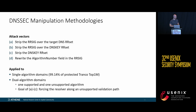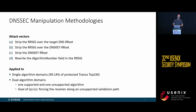We applied the attack vectors to single-algorithm domains and dual-algorithm domains. Single-algorithm domains are the most frequent — more than 99% of protected Tranco domains use them. The dual-algorithm domains we tested had one supported and one unsupported algorithm. The goal of attack vectors A through C is to force the resolver along an unsupported validation path.